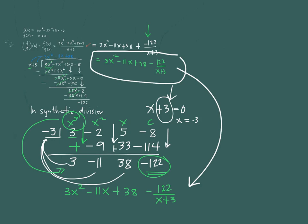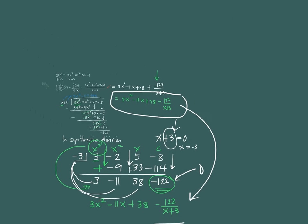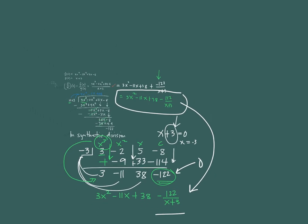Synthetic division is a faster way of finding a quotient. Just make sure you follow the steps properly: multiply and then add, repeating the process until you get the remainder. If the remainder value is 0, there's no need to write any additional expression at the end. That's the operations on functions involving division.